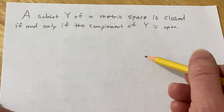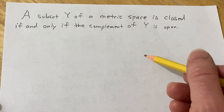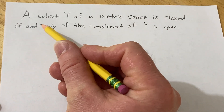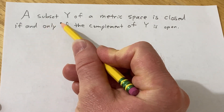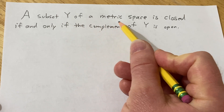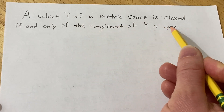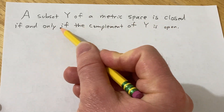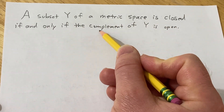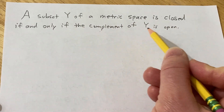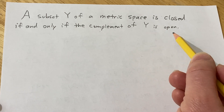In this video we're going to give a careful proof that a subset Y of a metric space is closed if and only if the complement of Y is open.